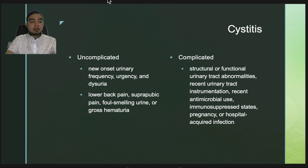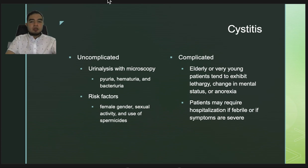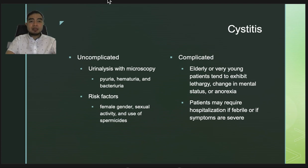Complicated cystitis may arise in the setting of structural or functional urinary tract abnormalities, recent tract instrumentation, recent antimicrobial use, immunosuppressed states, pregnancy, or hospital-acquired infection. Office dipstick may be helpful: the presence of nitrites reflects bacterial colonization, and the presence of leukocyte esterase reflects pyuria.